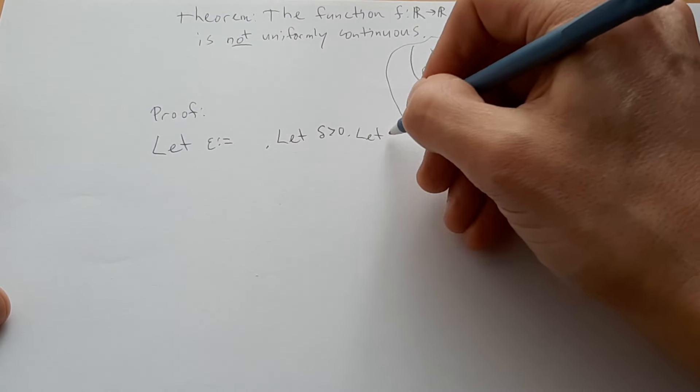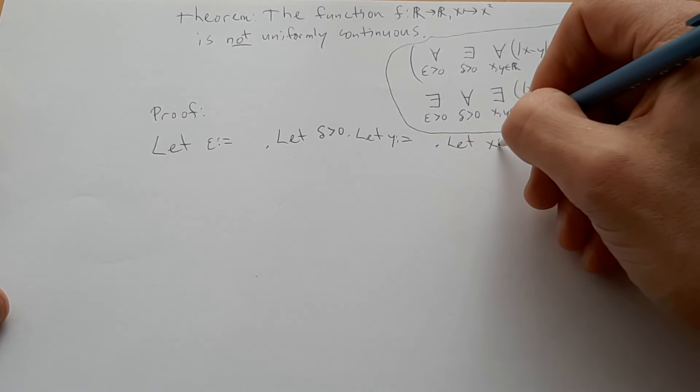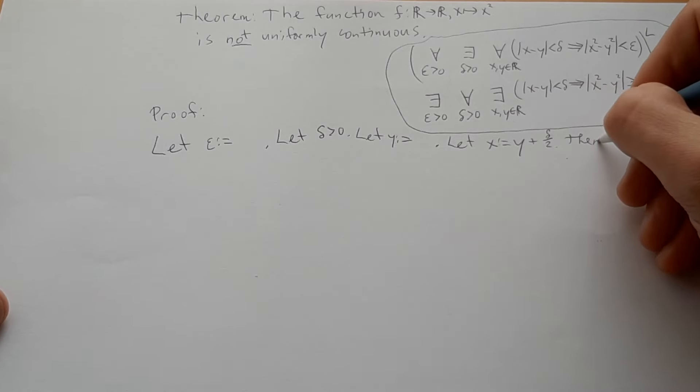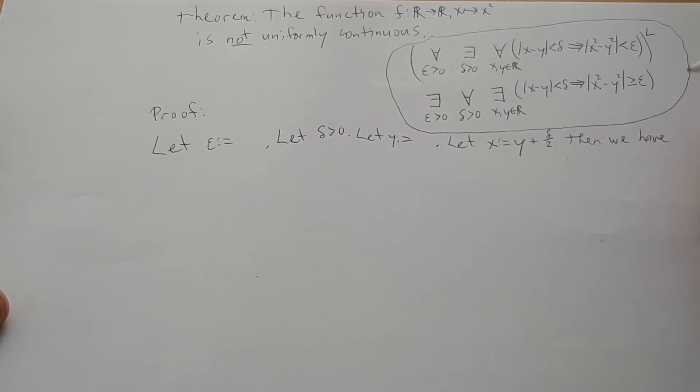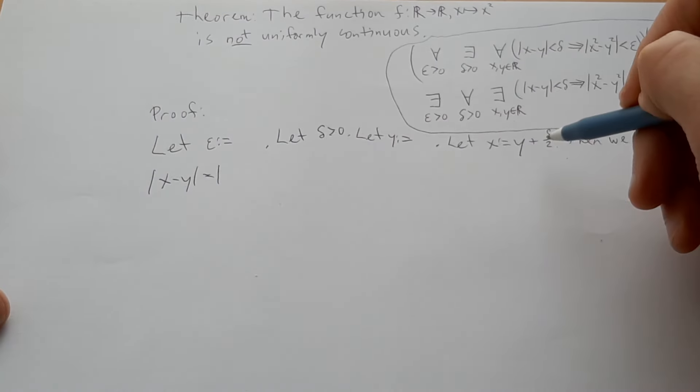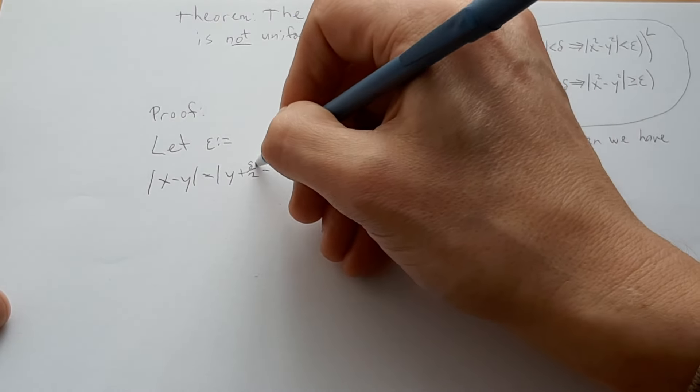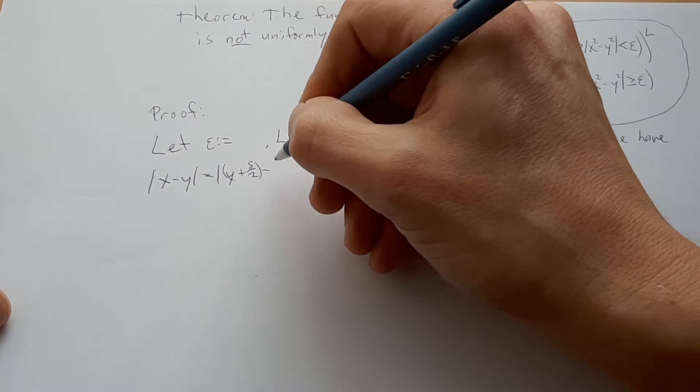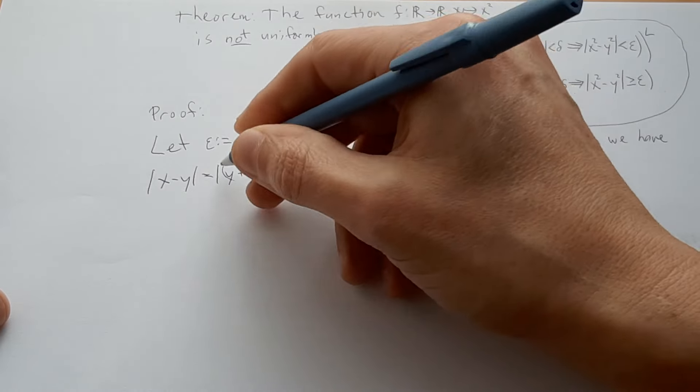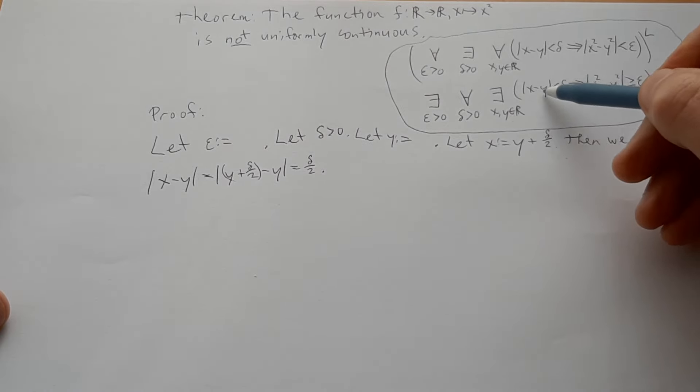We'll say let y be equal to something. We'll leave that open. And we'll let x be equal to whatever y is plus delta over 2. Then we have, now let's see what that would give us. x minus y would just be y plus delta over 2, and then we would be subtracting y, which would just give us delta over 2, which of course is a positive number, so we don't need these absolute value signs. Okay, well that's taken care of then. We at least know that these two are close to each other.